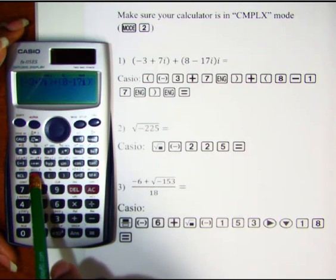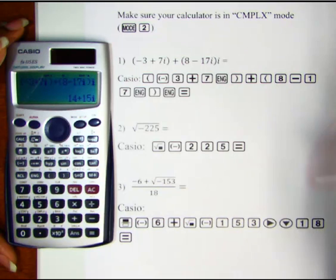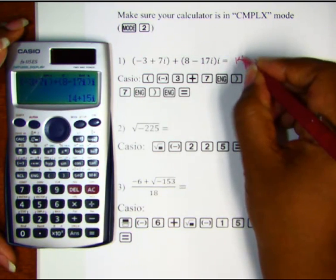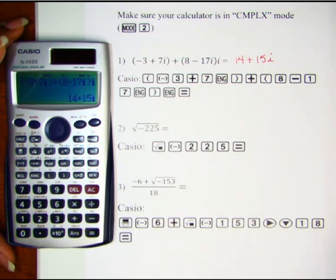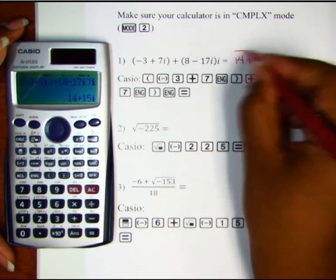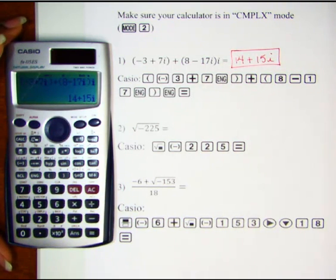then times i, so we hit ENG again and hit equals, and we get 14 plus 15i. The result is another complex number written in a plus bi form.